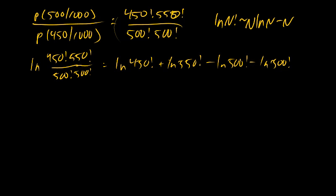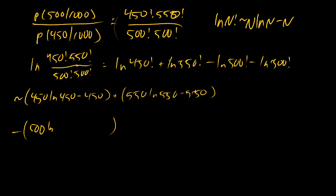log of 450 factorial plus log of 550 factorial minus log of 500 factorial minus log of 500 factorial. Now we can apply Stirling's approximation in these cases. This is approximately equal to, and I'll just do each case individually. We get 450 log 450 minus 450 plus 550 log 550 minus 550 minus the quantity 500 log 500 minus 500, minus the quantity 500 log 500 minus 500. And then this will come up to a particular number.